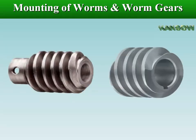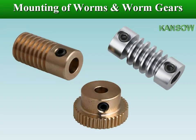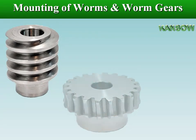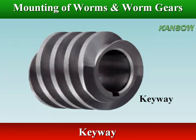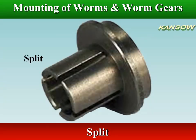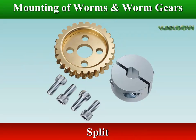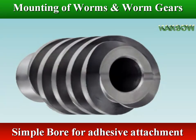Worms and worm gears can be mounted on a hub or shaft. A hub is a cylindrical projection on one or both sides of a worm or worm gear, often providing a screw or other shaft attachment mechanism. Hubless gears are typically attached via press-fit, adhesive, or internal keyway. One or more square cut-outs exist in the gear bore for exact mounting on the shaft, and the gear can also be attached by screws through the hub, or by a split hub clamped down to grip the shaft, or via a straight bore designed for adhesive attachment.